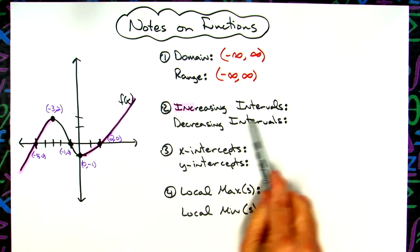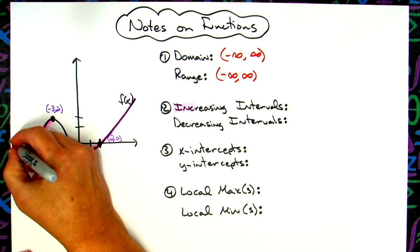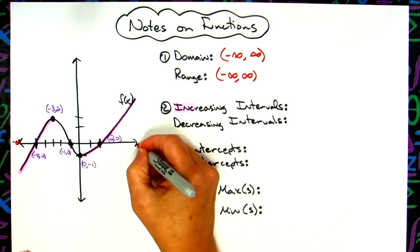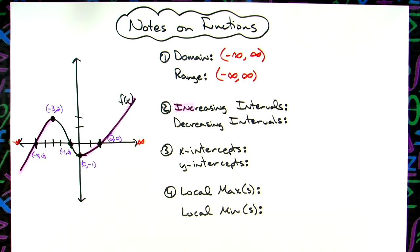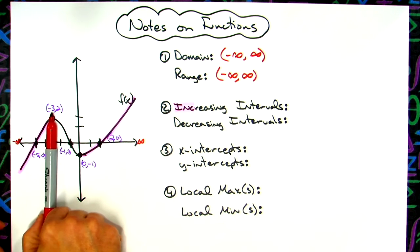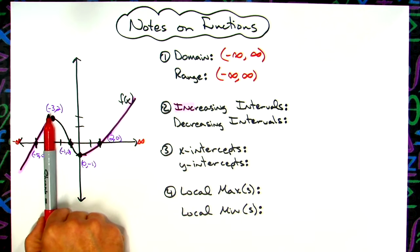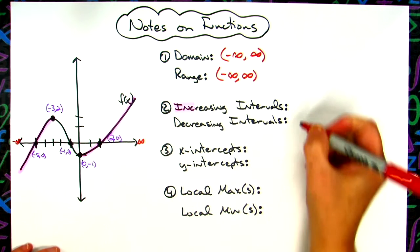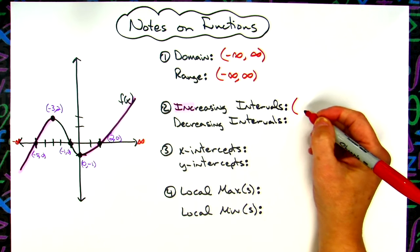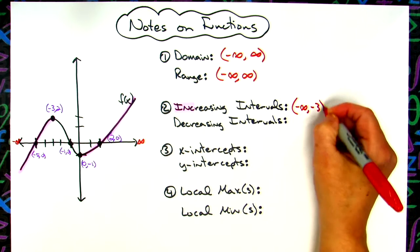Now when I do intervals, increasing intervals, I want my x values. So we need to remember that negative infinity is all the way down here, positive infinity is all the way down here. So moving from left to right along the x-axis, it is increasing from negative infinity all the way up to the x value of negative 3. So we'll use curvy brackets because it is intervals here. So negative infinity all the way up to negative 3.